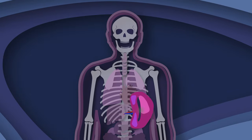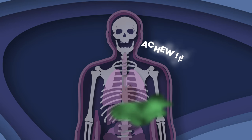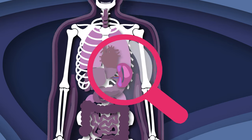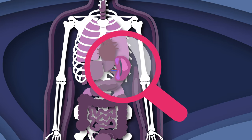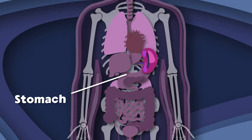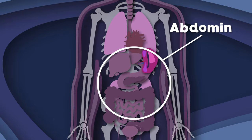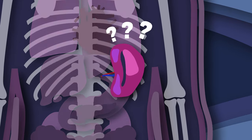The spleen is located under the ribcage, above the stomach, here in the upper left quadrant of the abdomen — the space I share. What's the anatomy of the spleen?